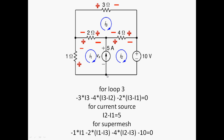Now we have to consider the super mesh. In order to apply KVL to the super mesh, we travel from positive to negative — a fall in potential — giving minus 1 times I1, then minus 2 times (I1 minus I3), then minus 4 times (I2 minus I3), and travelling from positive to negative end of the voltage source gives minus 10, and the sum equals zero. Now we have three unknowns — I1, I2, and I3 — and three equations. Hence, we can find the values of I1, I2, and I3 by solving these three equations.